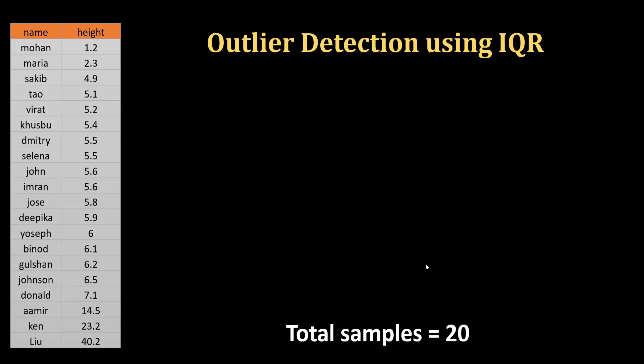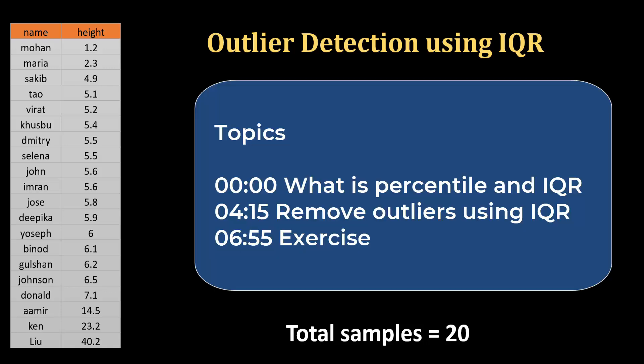In this tutorial we will be removing outliers using the IQR technique. As usual we'll go over some theory first, then we'll write code in Python pandas to remove the outliers, and in the end we'll have an interesting exercise for you to solve.